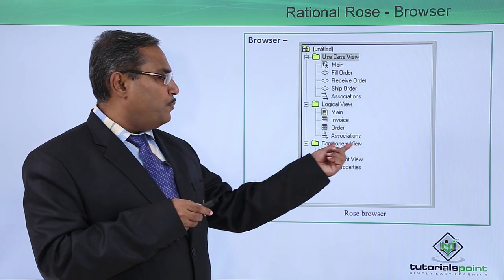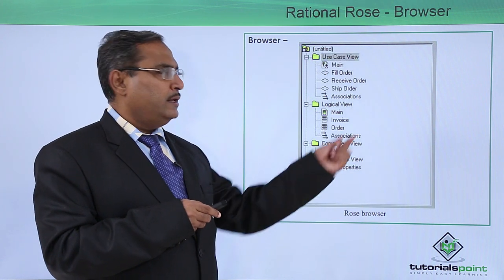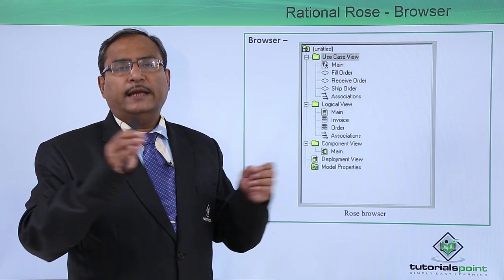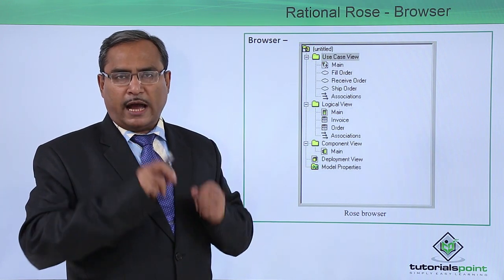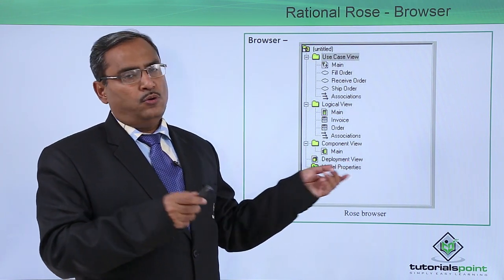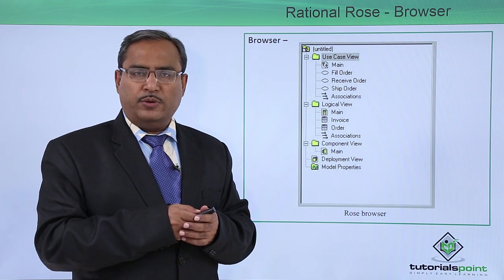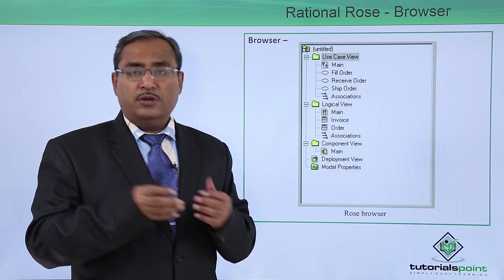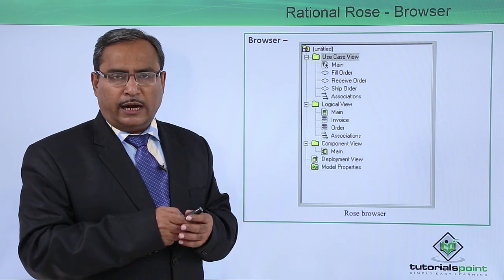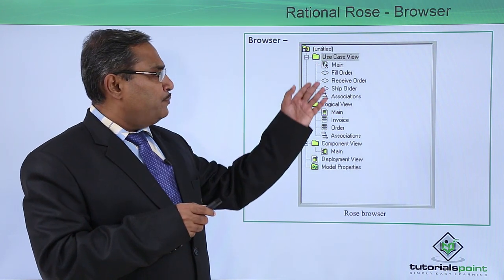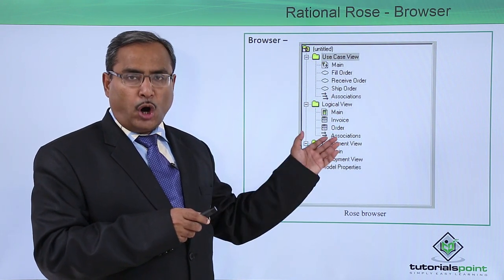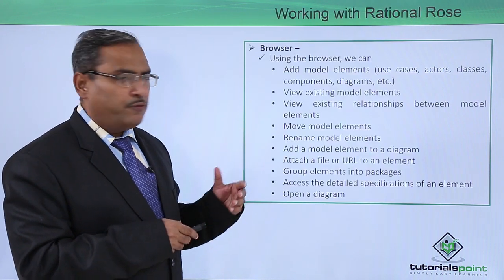We are having this component view. Under this component, if you click on main, the respective diagram window will get open. Then we can drag the different icons from the toolbar and draw the component diagram. We are having this deployment view where you can draw the nodes, and you can have the architectural diagram of the system. This is the browser section and it has very resourceful options. Let us go for some more detailing.